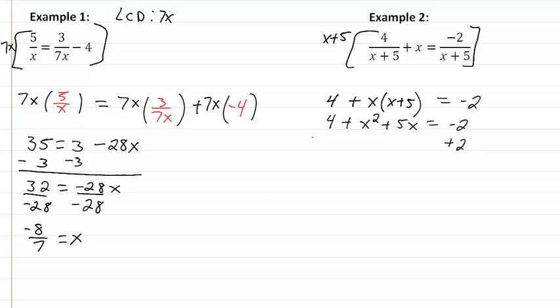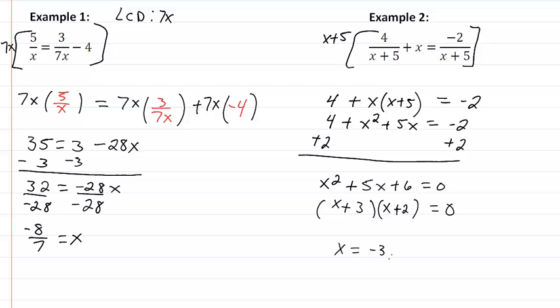Let's get everything on one side so we'll add 2 to both sides and we get x squared plus 5x plus 6 equal to 0. This easily factors to x plus 3 and x plus 2, so that means x will equal negative 3, negative 2.